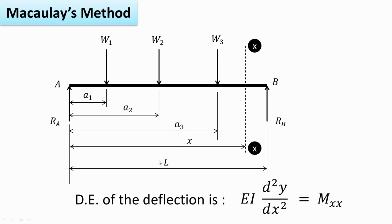The total span length of the beam is L. Consider any section XX in such a way that it will cover all the loads on the left hand side of it. So on the left hand side of this section XX, the reactive force Ra is there, and active forces W1, W2 and W3, acting at distances A1, A2 and A3 from the left hand support.